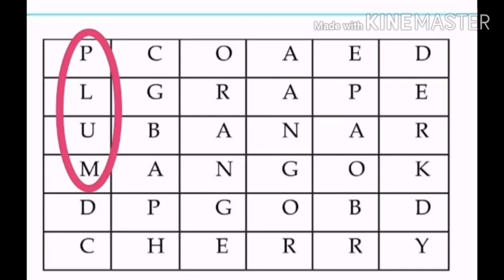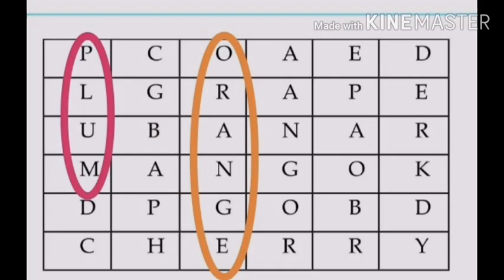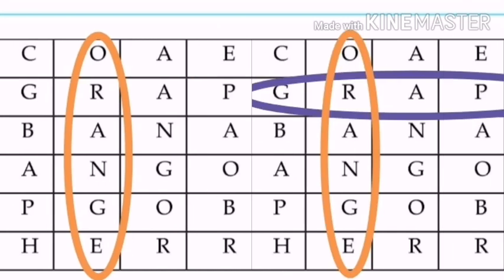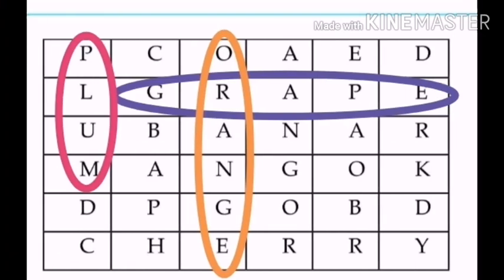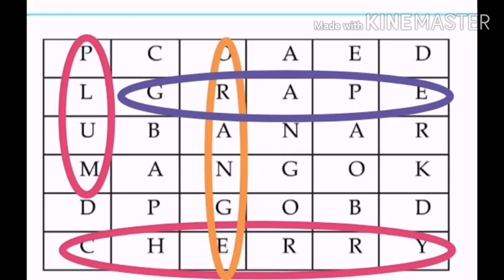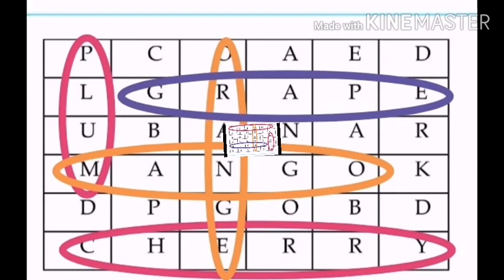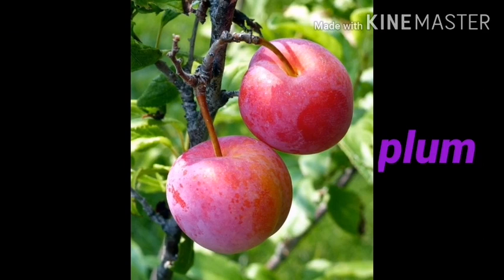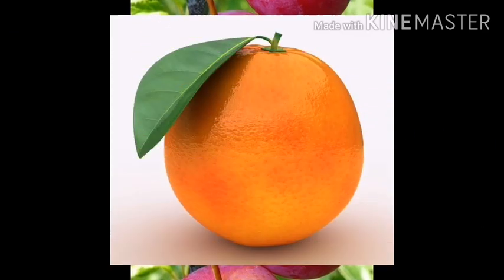Now we got the trick. How to find out the fruit's names from the box? Second, I got orange. And third, grapes. Fourth, cherry. Fifth, mango. I got five fruits names from the list.